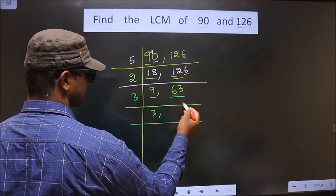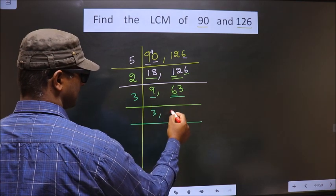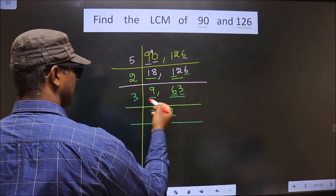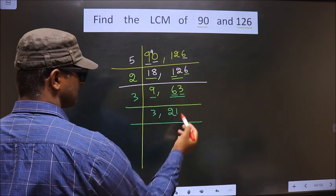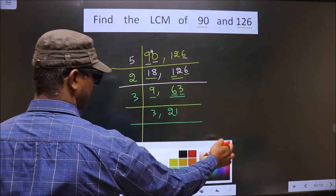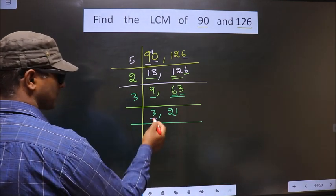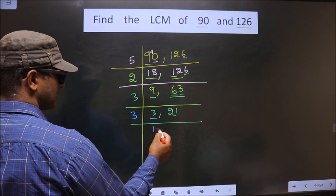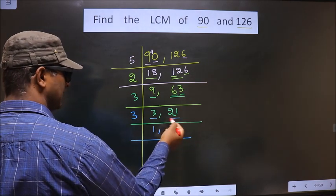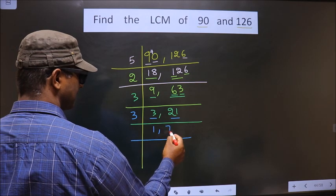So, here first number is 6. When do we get 6 in 3 table? 3 times 2, 6. Next number is 3. When do we get 3 in 3 table? 3 times 1 is 3. Now, here we have 3. 3 is the prime number, so we take 3 times 1 is 3. Now, here we have 21. When do we get 21 in 3 table? 3 times 7 is 21.